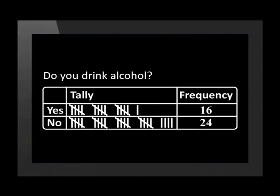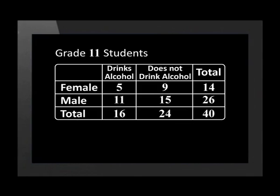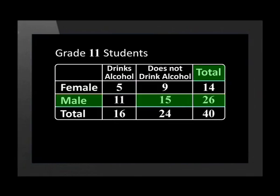From the tally table, we can see that 16 out of 40 grade 11s drink alcohol. We know that 40 were interviewed because 16 plus 24 is 40. The group put this data into a contingency or two-way table to compare the genders of the students to their use of alcohol. Now we can see that only 5 out of 14 females in grade 11 drink alcohol, and that 15 out of 26 grade 11 males don't drink alcohol. This method of organizing the data makes it far easier to analyze.